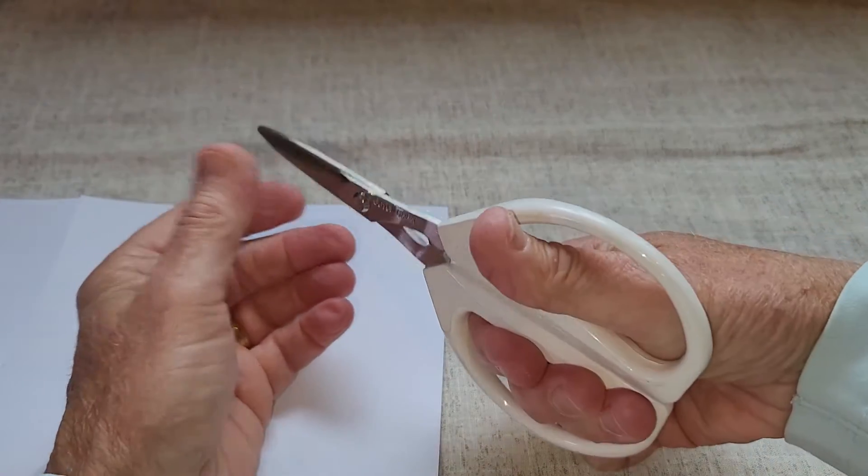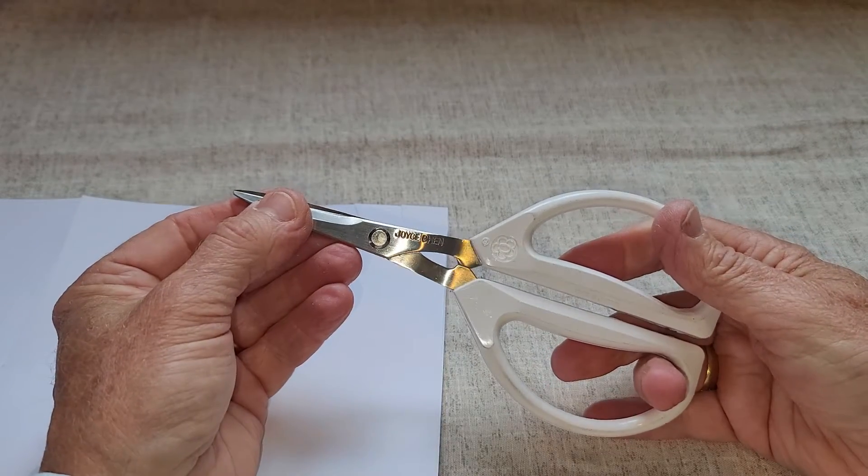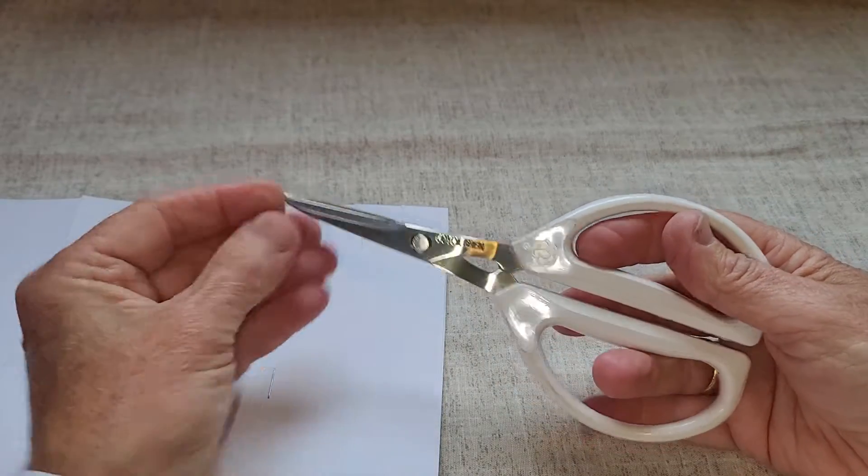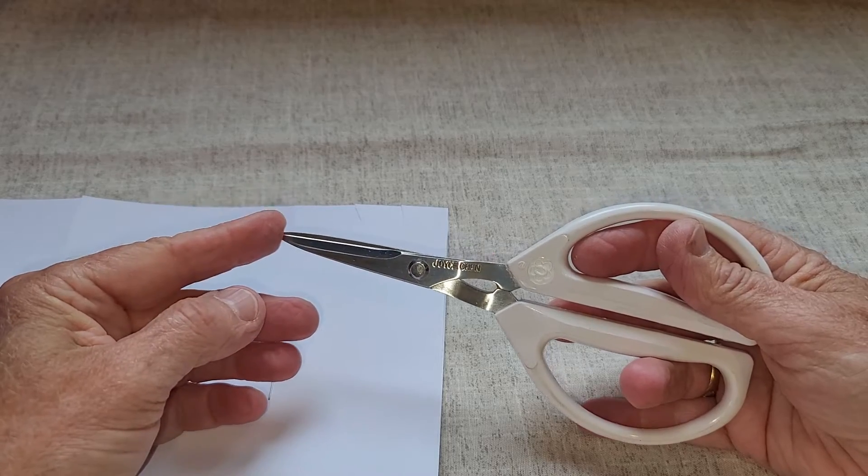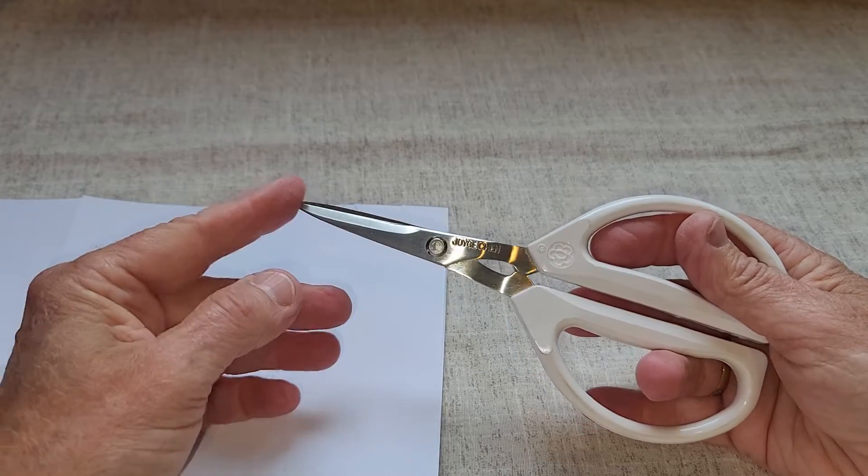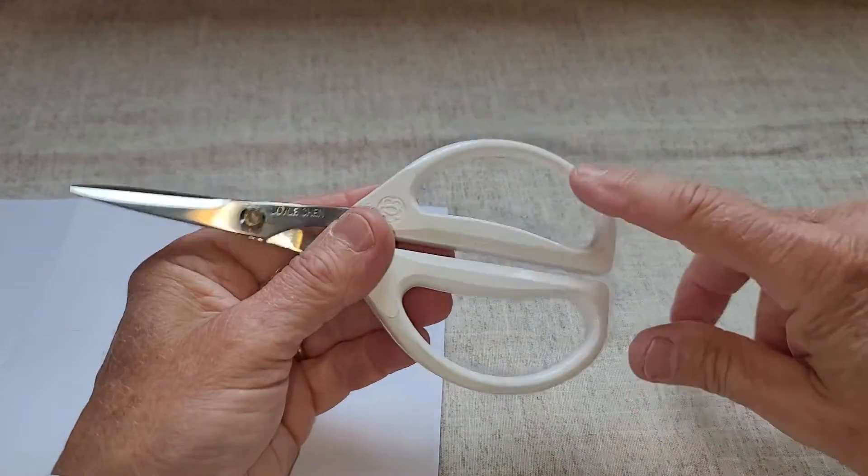You can apply much more pressure for cutting through tougher material. These are very sharp and they cut all the way out to the tip of the scissors. They're stainless steel. One thing to note is the handles come in different colors, so if you didn't want white, you could get a different color.